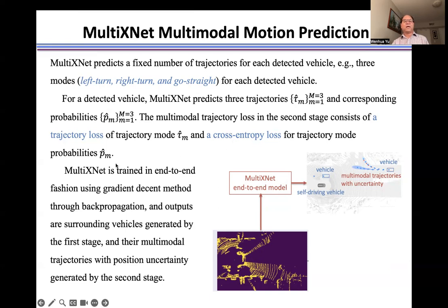We train MultiXNet in an end-to-end fashion using gradient descent methods through backpropagation. The outputs are surrounding vehicles generated by the first stage and their multimodal trajectories with position uncertainty generated by the second stage.